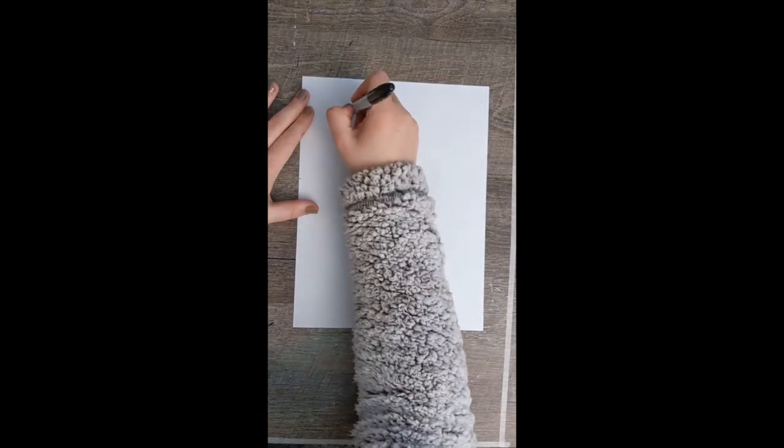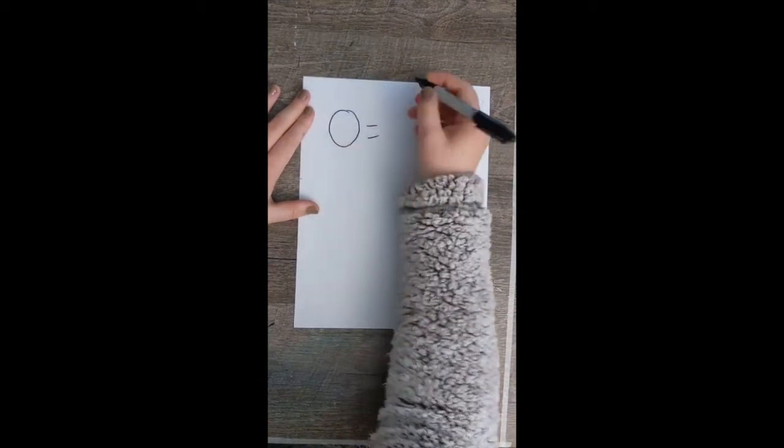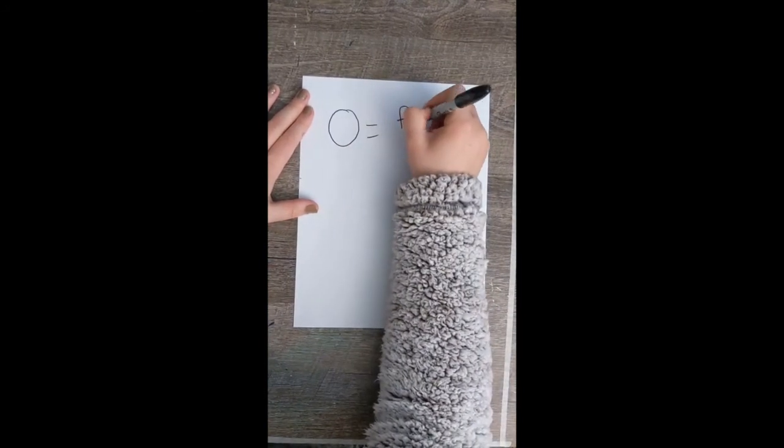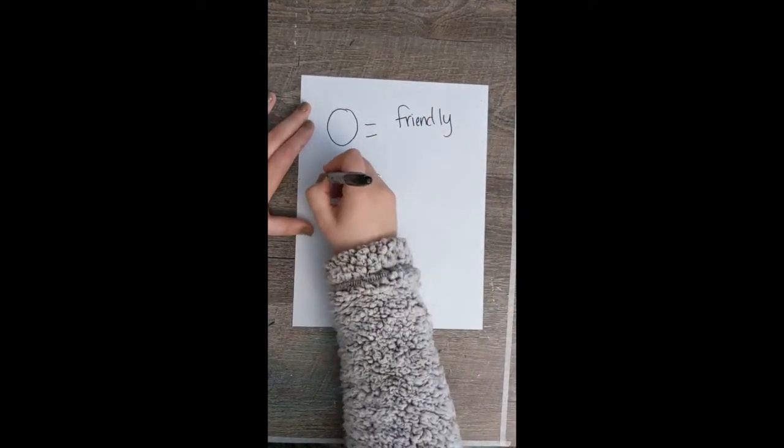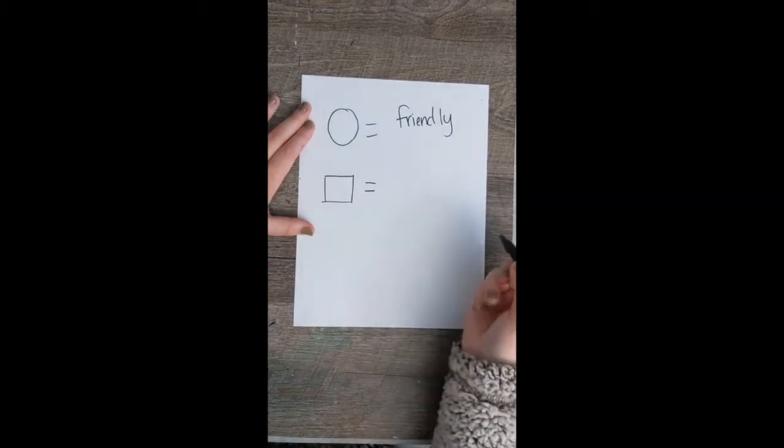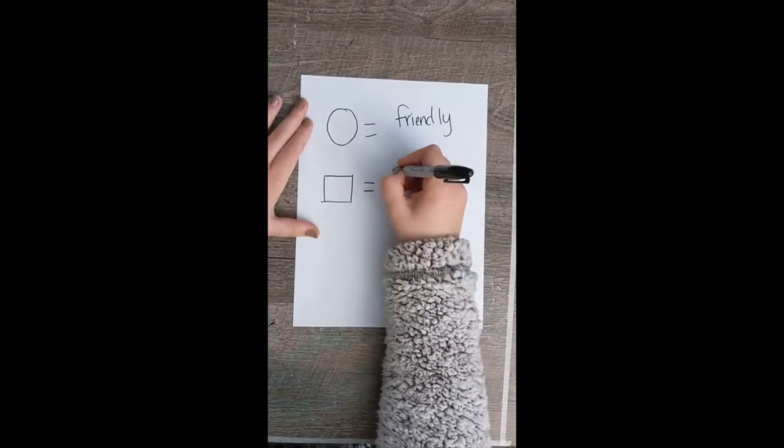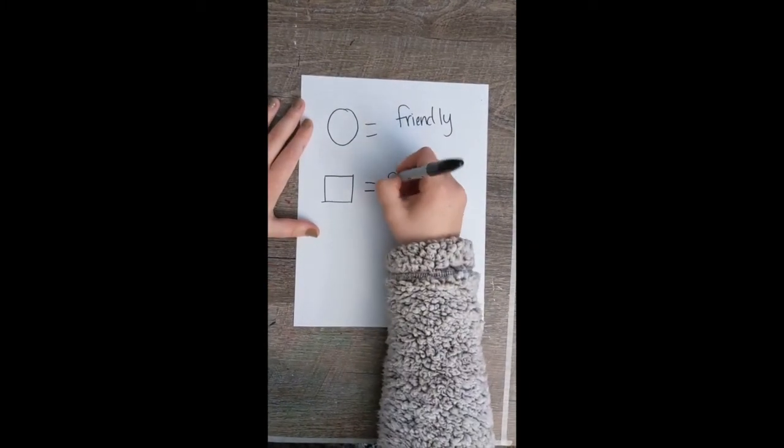So after watching the video, we've noticed that a circle tends to mean that you are friendly. A square tends to mean that you are reliable. You can count on them. They're sturdy.